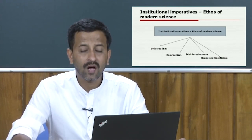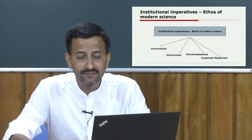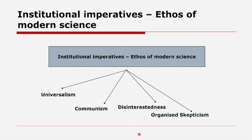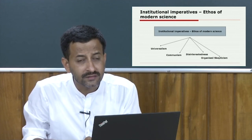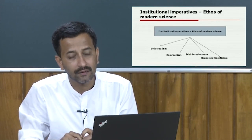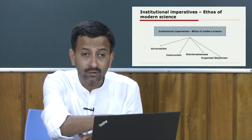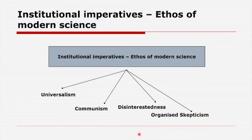Merton flags four institutional imperatives — four ethos of science — namely universalism, communism, disinterestedness, and organized skepticism. If you look at universalism, communism, and disinterestedness, they refer to the goals of science. Whereas organized skepticism is not only a goal of science, but also a methodological mandate — you keep postponing your judgment unless and until all facts are gathered.